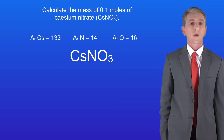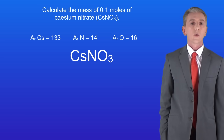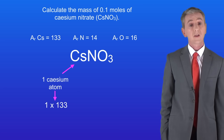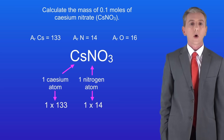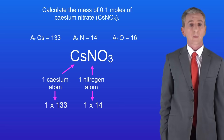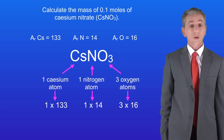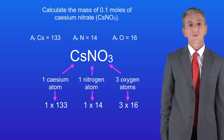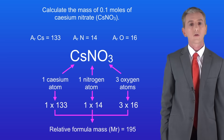First we'll work out the relative formula mass of caesium nitrate. We've got one caesium atom and caesium has a relative atomic mass of 133. We've got one nitrogen atom and nitrogen has a relative atomic mass of 14. Finally we've got three oxygen atoms and oxygen has a relative atomic mass of 16. Adding all of these together gives us a relative formula mass for caesium nitrate of 195.